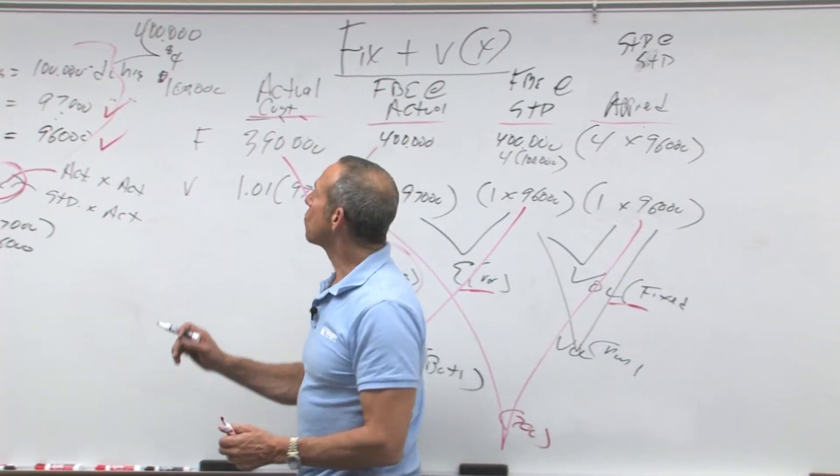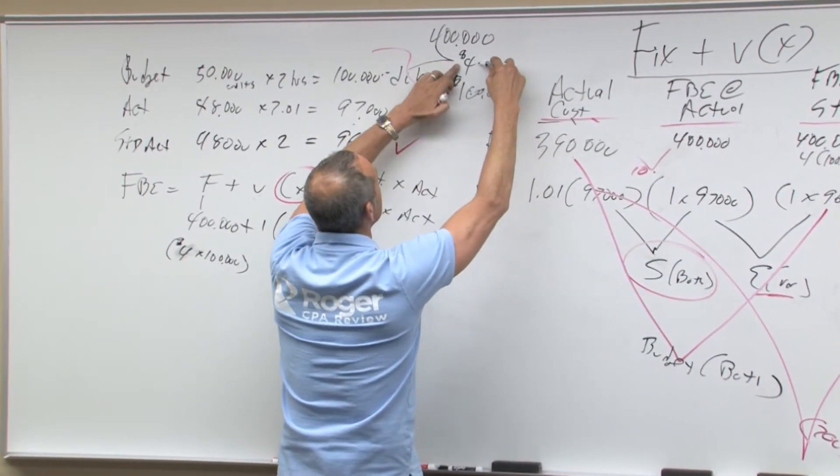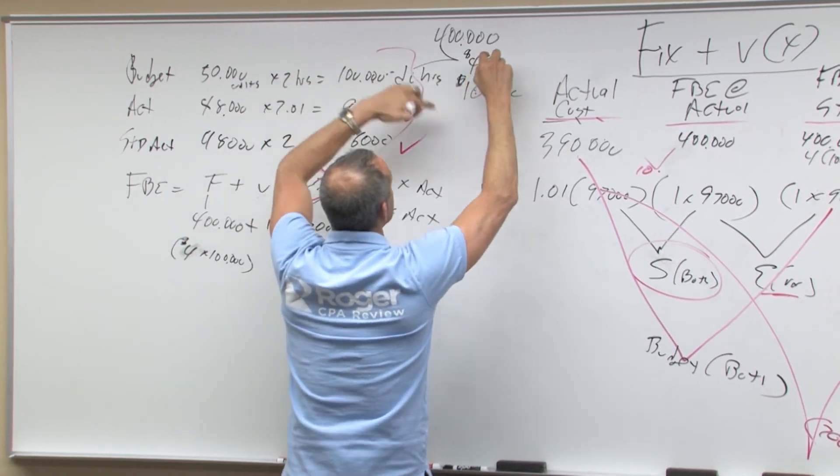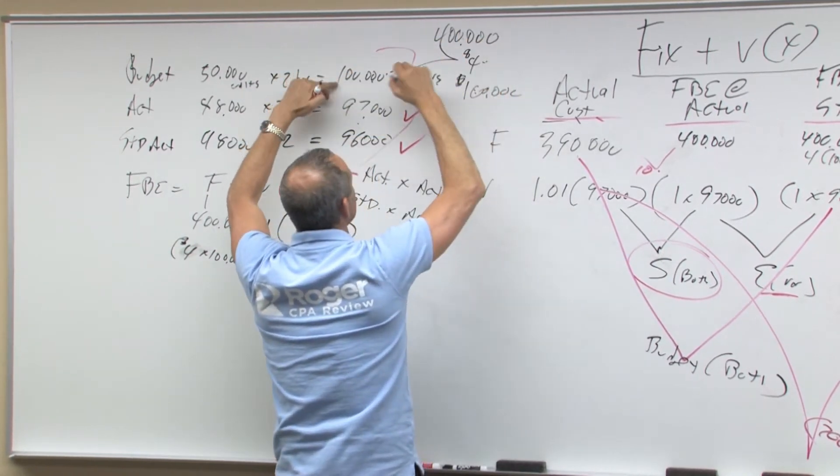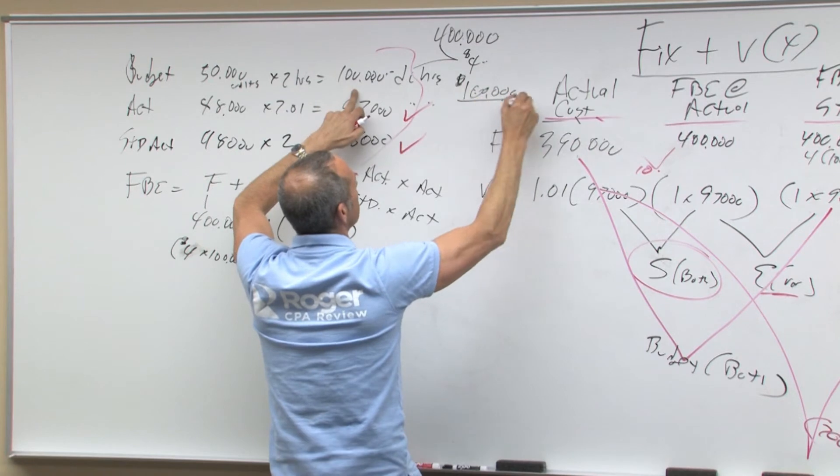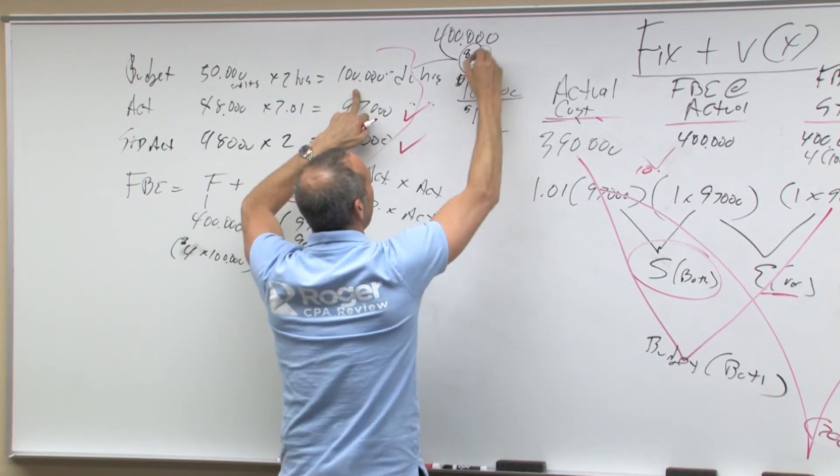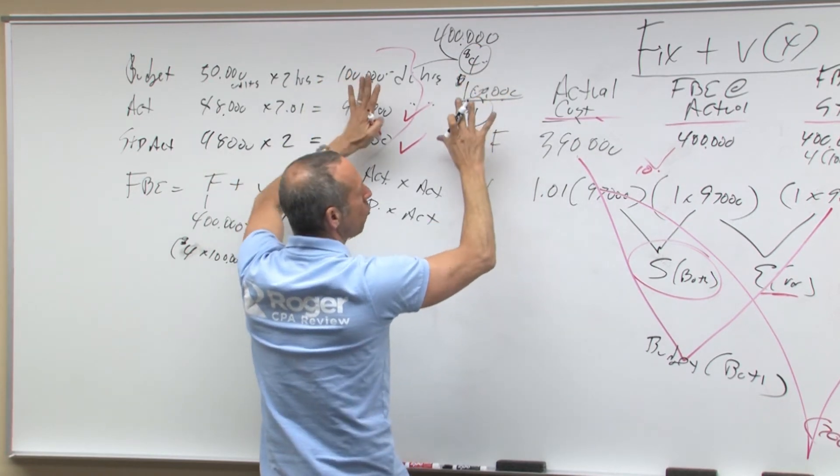That's what we had over here. We had $4 for fixed, $400,000 divided by 100,000 hours is four, and $100,000 divided by 100,000 is a dollar. So we have four and one, those are what we brought over.